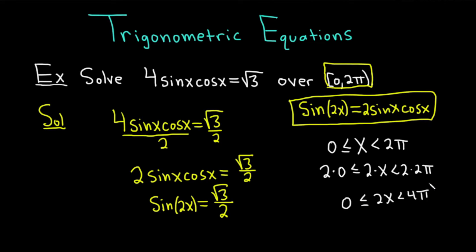2 times 0 is 0, less than or equal to 2x, less than 4π. This is so important. I'm going to put this in a box. So you're looking for all of the values of sin(2x), where 2x is between 0 and 4π. This is going to give you extra answers that you wouldn't get or you might miss if you didn't do this. So super, super key, kind of emphasize how important it is.